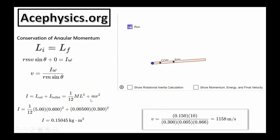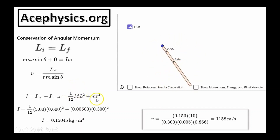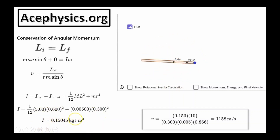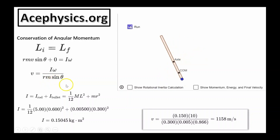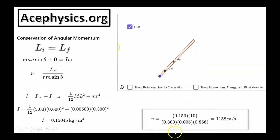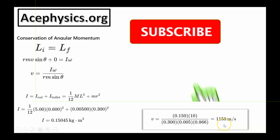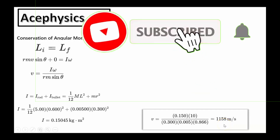This allows us to calculate the combined moment of inertia: 0.15 kilogram-meters squared. We know r, m, theta, and omega. Therefore, we can calculate the initial velocity of the bullet: 1,158 meters per second.